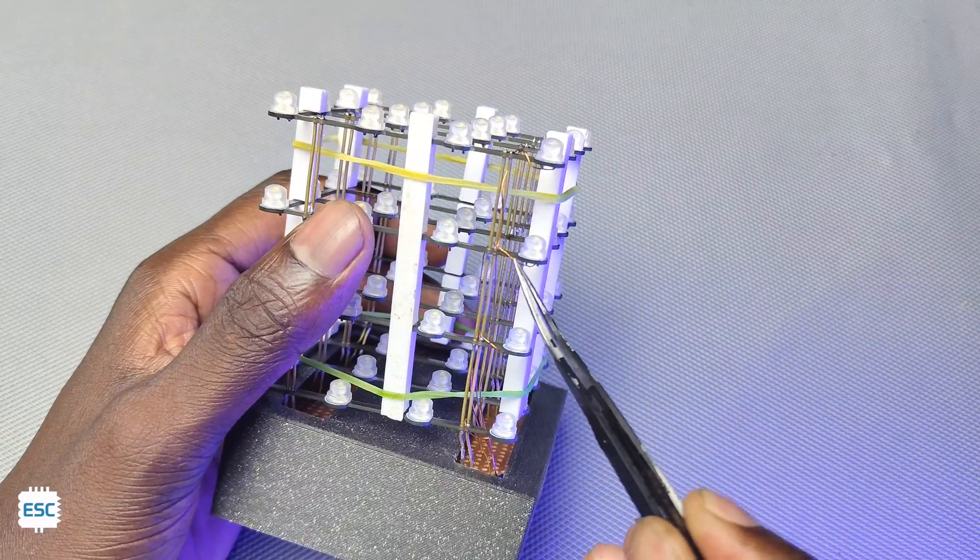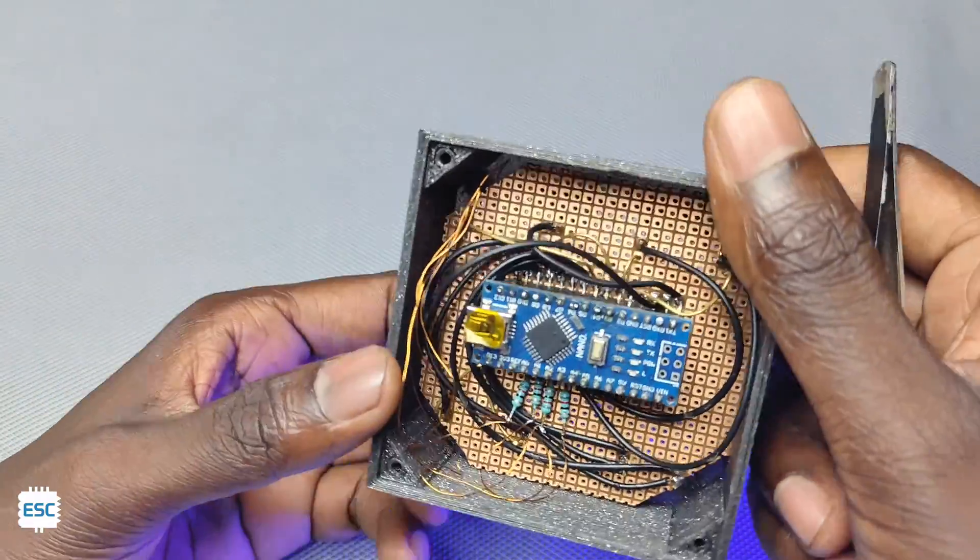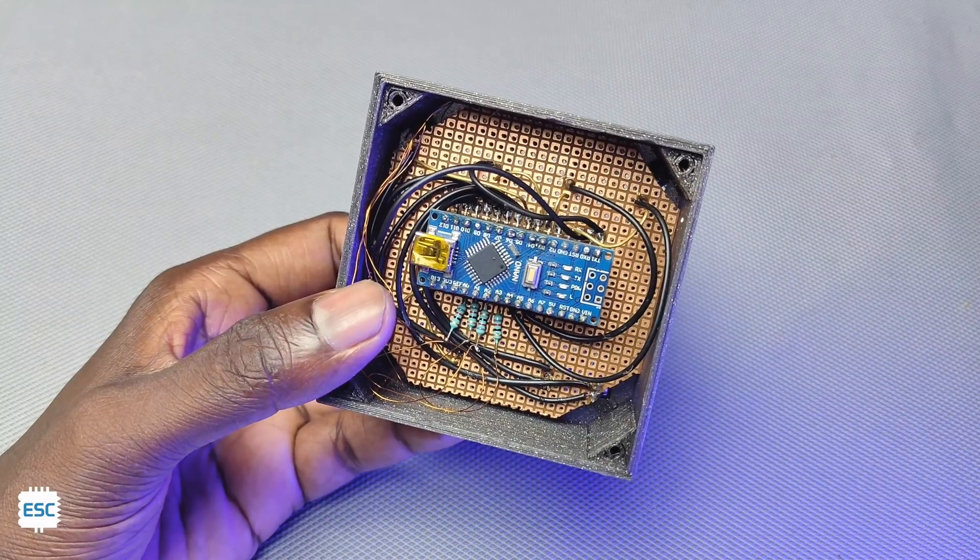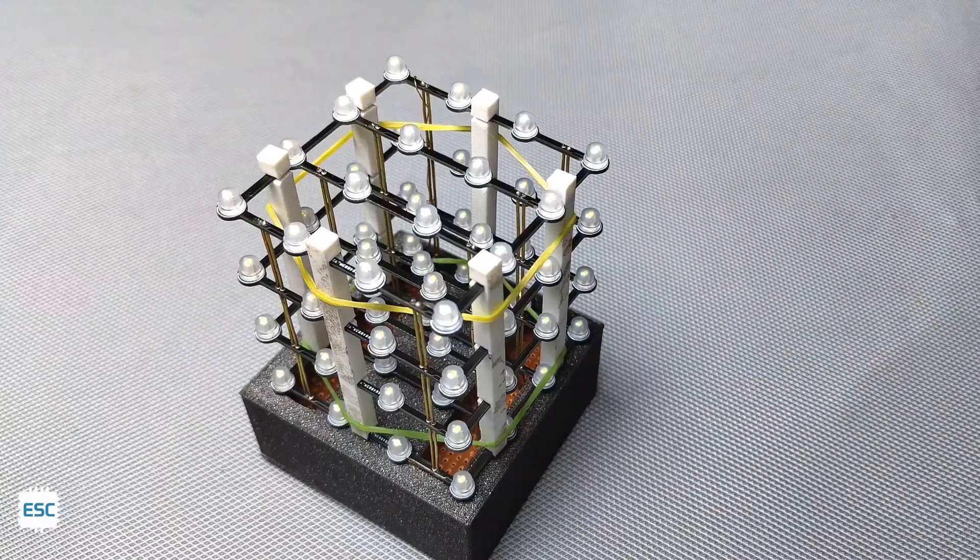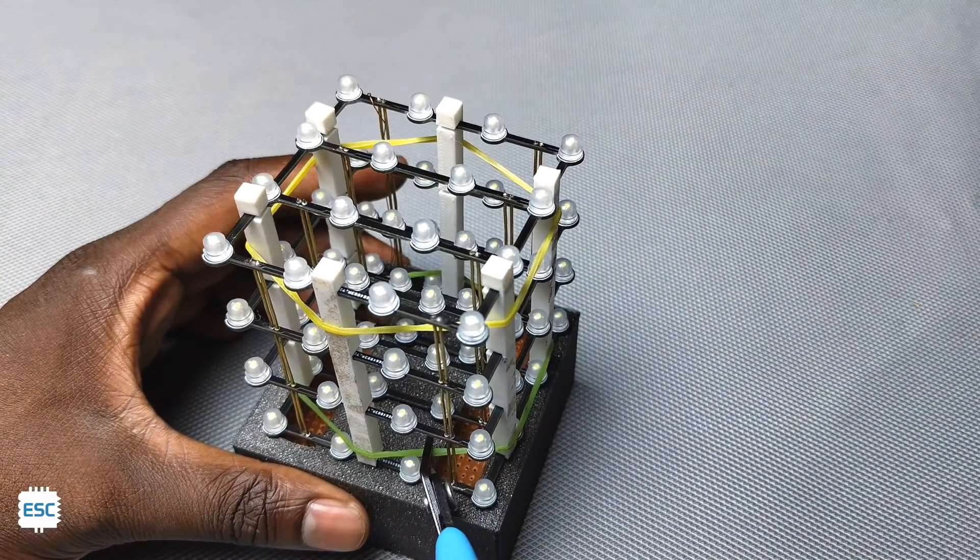I connected each layer to the circuit using enameled copper wire. Now the soldering job is finished, so I removed the rubber band and jig from the cube and here is the final look.